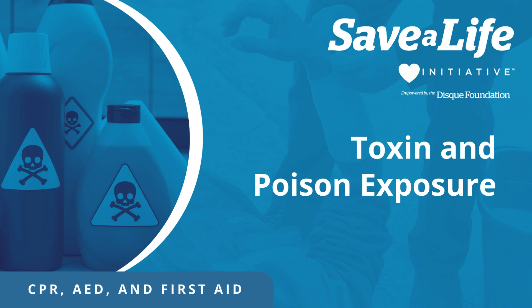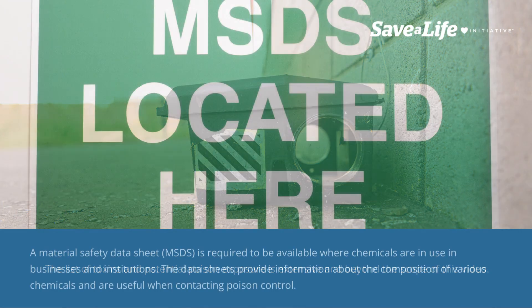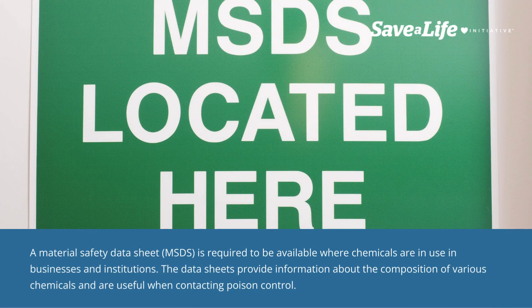Toxin and Poison Exposure. The list of toxins and potential poison exposure is extensive and beyond the scope of this video. A material safety data sheet is required to be available where chemicals are in use in businesses and institutions. The data sheets provide information about the composition of various chemicals and are useful when contacting poison control.